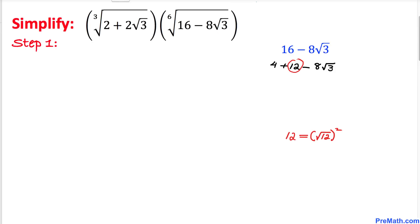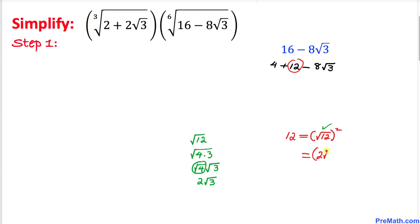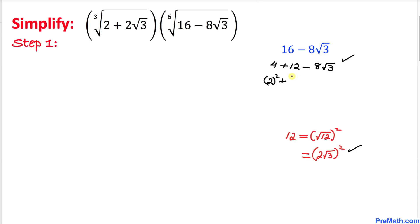Now let's focus on this part. The square root of 12 can be written as square root of 4 times 3. We can split it into two parts: square root of 4 is 2, times square root of 3. So therefore I can write 12 as 2 times square root of 3, whole squared. So this expression becomes: 4 written as 2 squared, plus 12 written as the quantity 2 times square root of 3, whole squared.